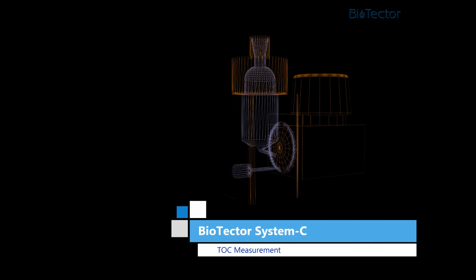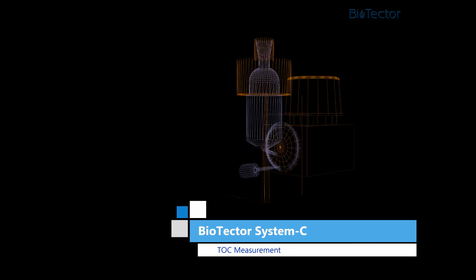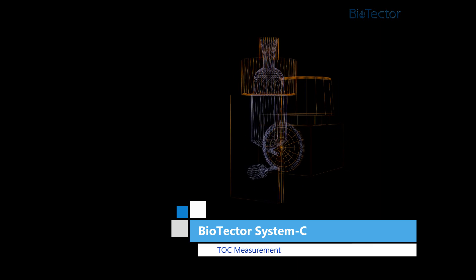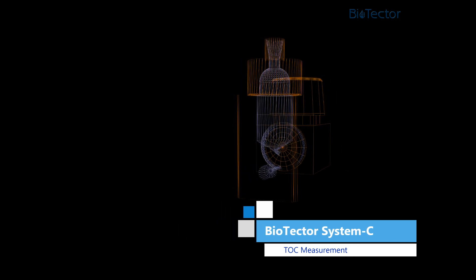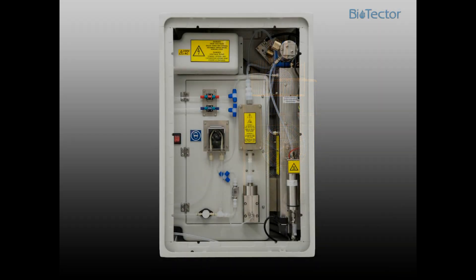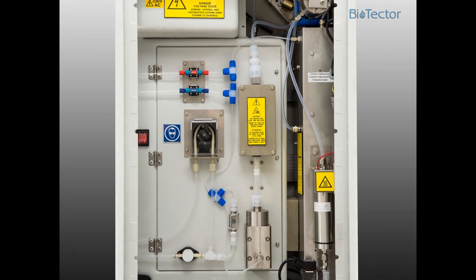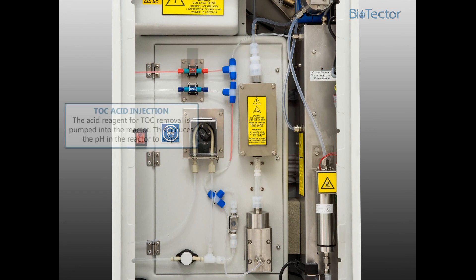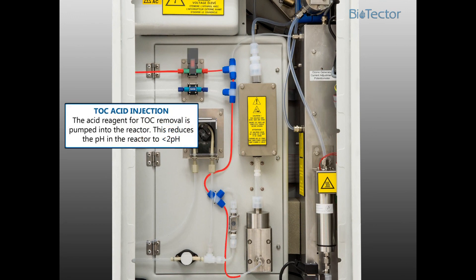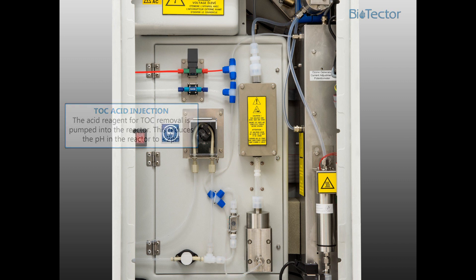Now, we will look at the TOC measurement phase. The acid reagent for TOC measurement is pumped into the reactor, reducing the pH in the reactor to less than 2.